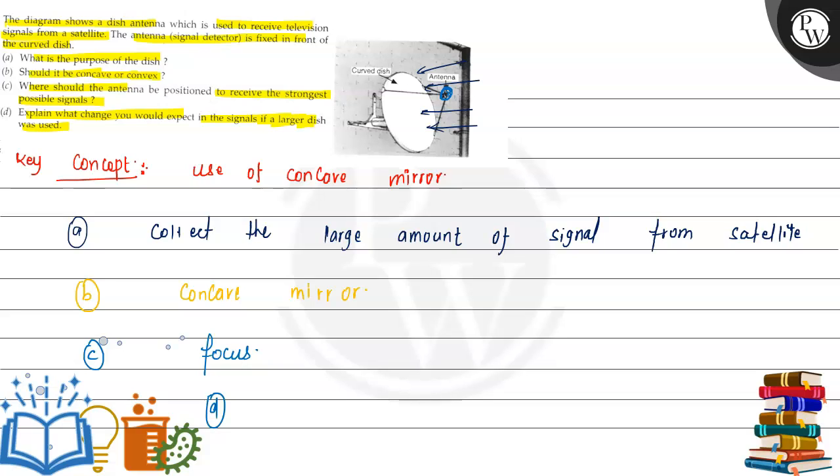And the D part is saying what change will happen if we use a larger disk? Instead of this, stronger signal will be received because more signal will come and after reflection will reach the focus, so a stronger signal will be received.